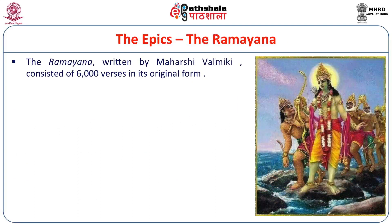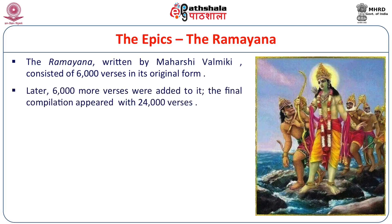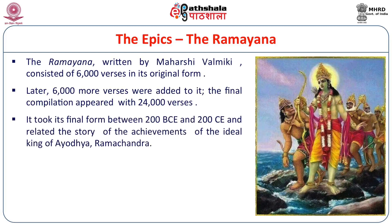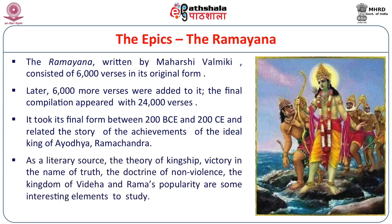The Ramayana, written by Maharshi Valmiki, consisted of 6,000 verses in its original form. Later 6,000 more verses were added, and the final compilation appeared with 24,000 verses. It took its final form between 200 BCE and 200 CE and relates the story of the achievements of the ideal king Ramchandra. As a literary source, the theory of kingship, victory in the name of truth, the doctrine of tolerance, and Ram's popularity are important elements in this story.